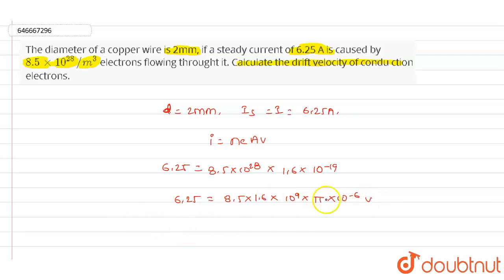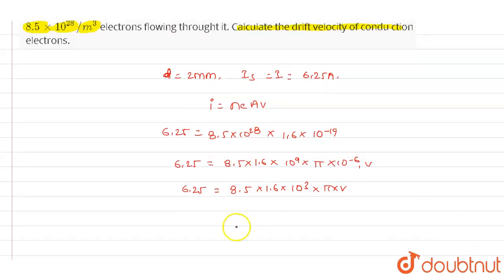We will write the value of v: 6.25 = 8.5 × 1.6 × 10^3 × π × v. Finding the value of v: v = 6.25 / (8.5 × 1.6 × 10^3 × π).